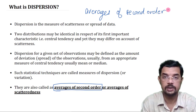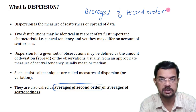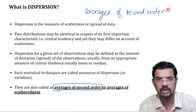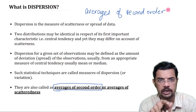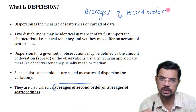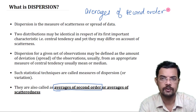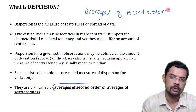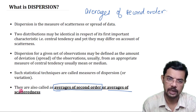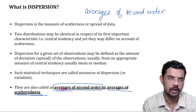The averages of first order are the measures of central tendency — that is, mean, median, and mode. In this chapter we shall discuss different measures of dispersion, which are all classified under averages of second order, also known as averages of scatterness.